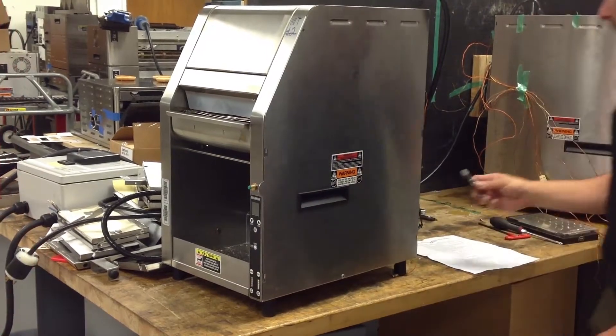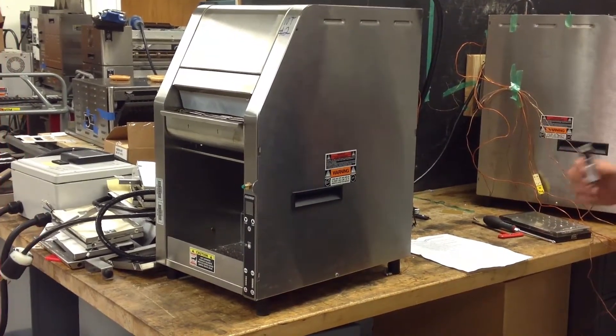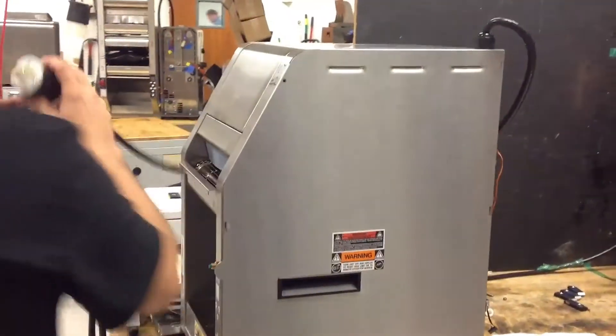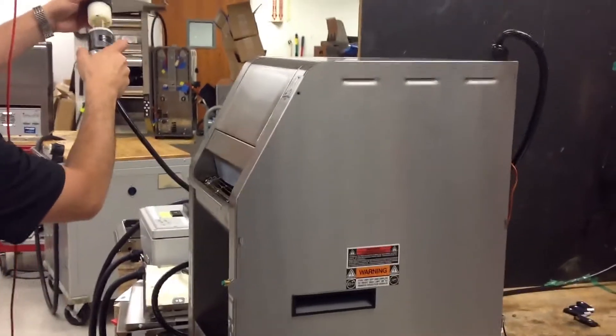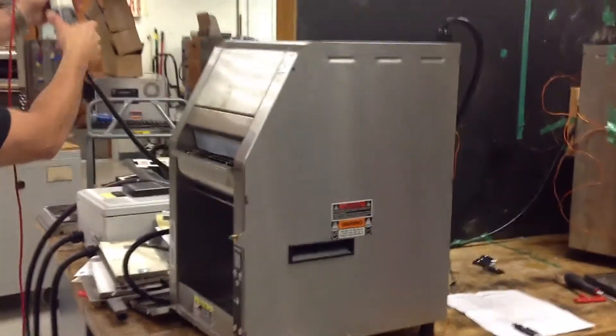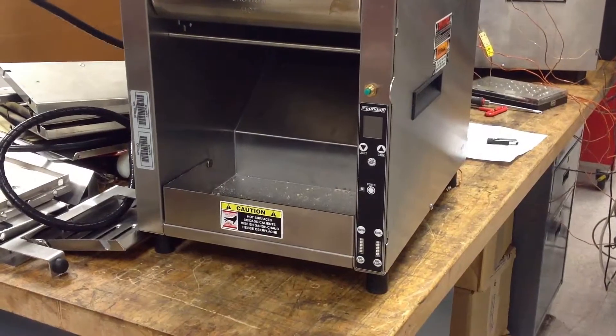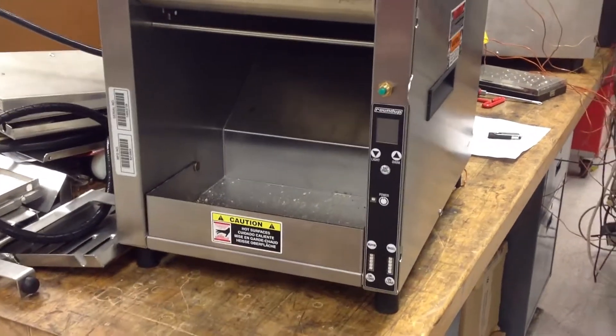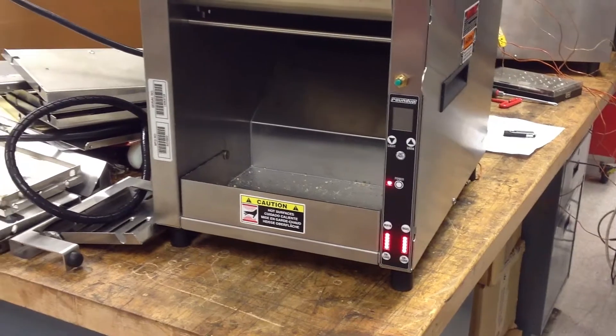Now we're going to do a menu update with the USB. First, apply power to the toaster again. On the front of the unit, you'll see the Chick-fil-A symbol come up. Wait until the display reads off.